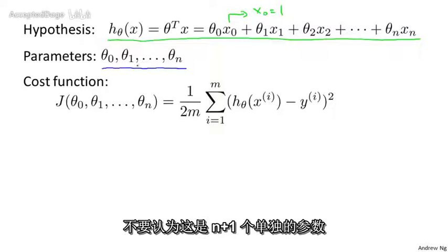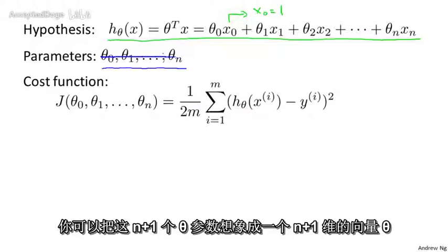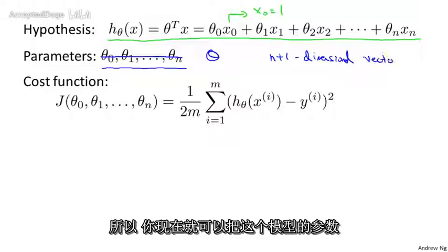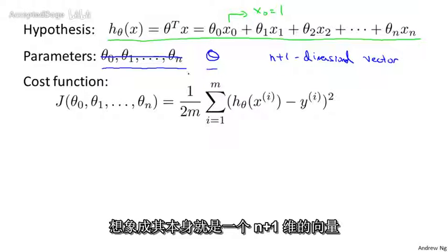The parameters of this model are theta 0 through theta n, but instead of thinking of this as n separate parameters, which is valid, I'm instead going to think of the parameters as theta, where theta here is an n plus 1 dimensional vector. So I'm just going to think of the parameters of this model as itself being a vector.